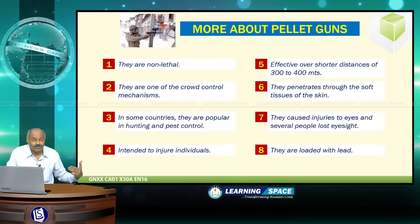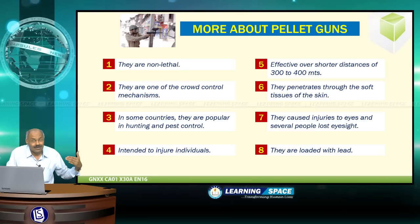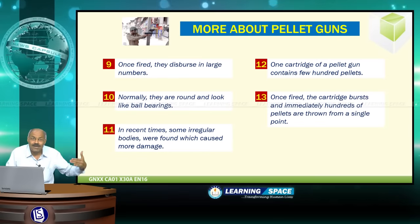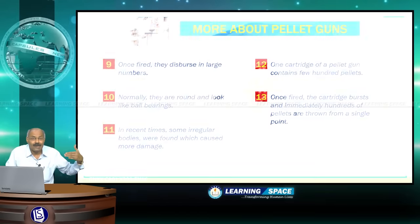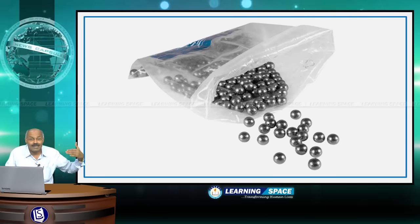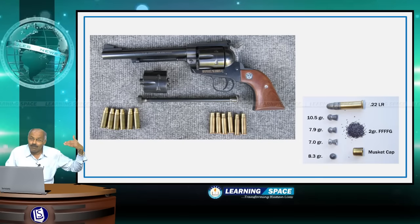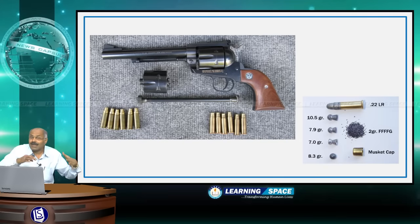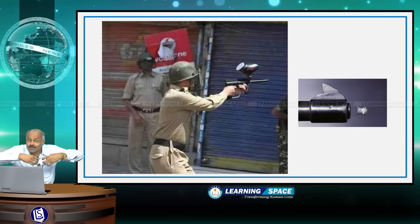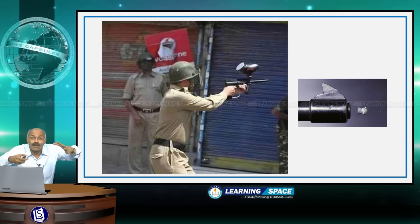Pellets are just like ball bearings and are loaded with lead. Once fired, they disperse in large numbers. Normally they are round and look like ball bearings, but in recent times some irregular bodies were found which caused more damage. One cartridge of a pellet gun contains a few hundred pellets, and once fired the cartridge bursts, immediately throwing hundreds of pellets from a single point.